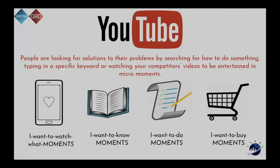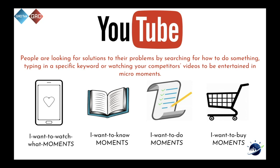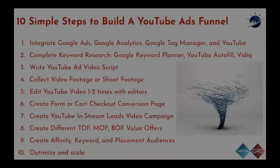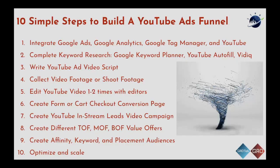People are looking for solutions to their problems on YouTube — searching for how to do something, watching competitor videos, or being entertained in micro-moments. These are four buckets, from the Tom Breeze course: I want to watch, I want to know, I want to do, or I want to buy. All of these different types of search intent are opportunities for us to create video ideas or topics around these four main categories.